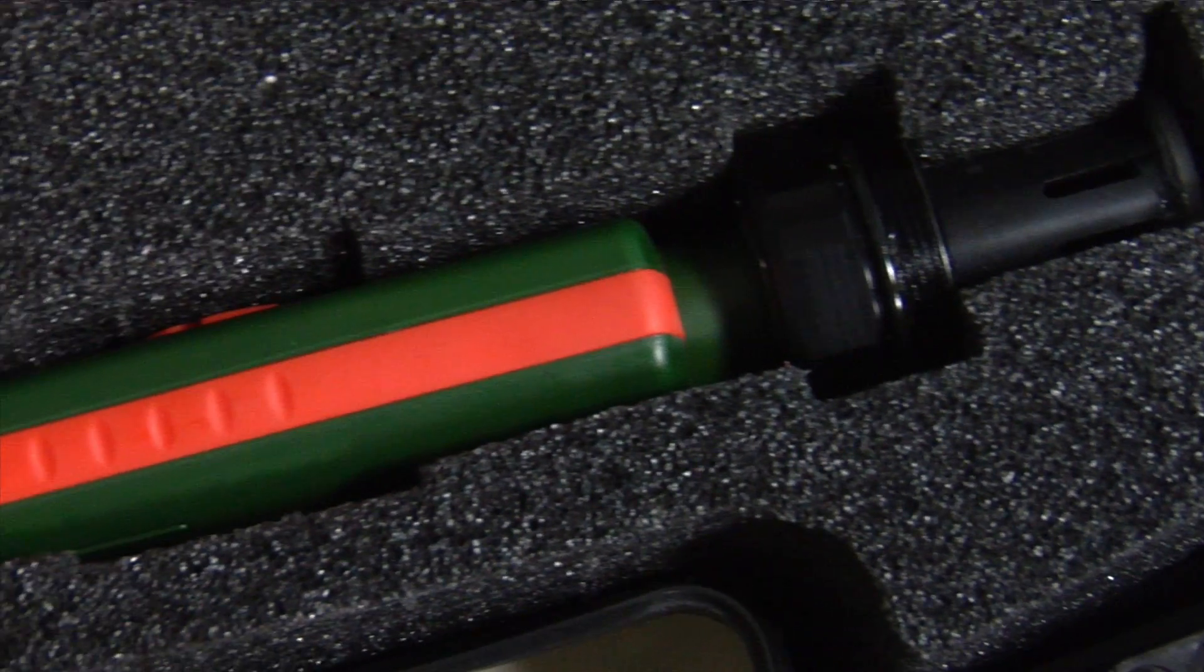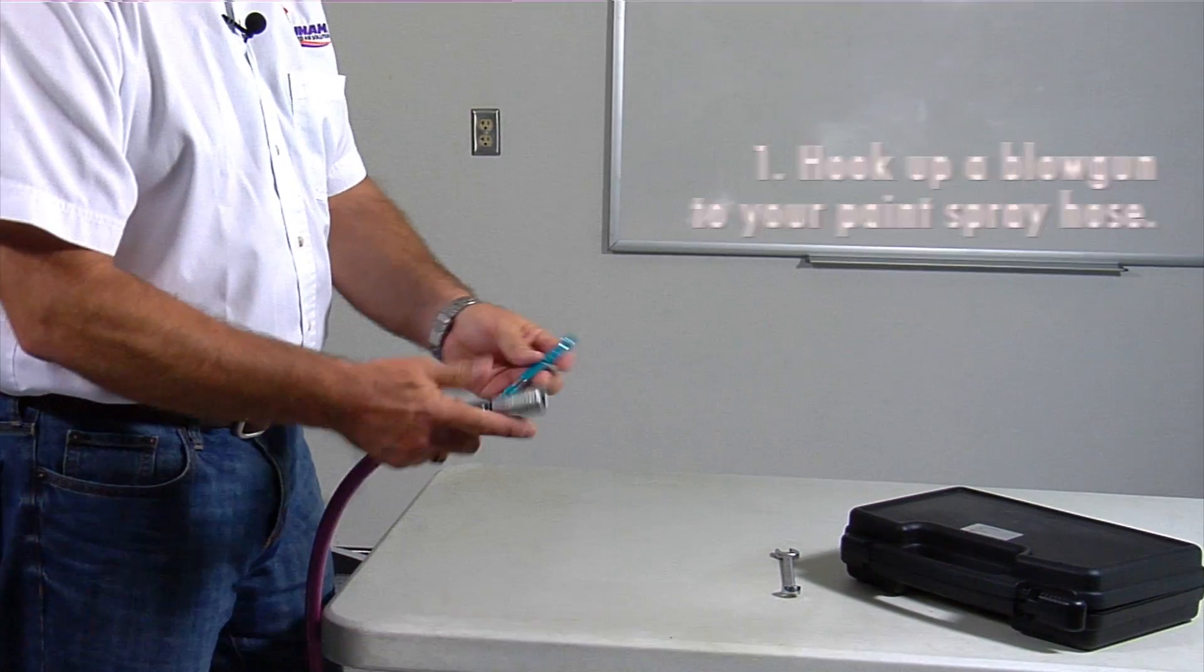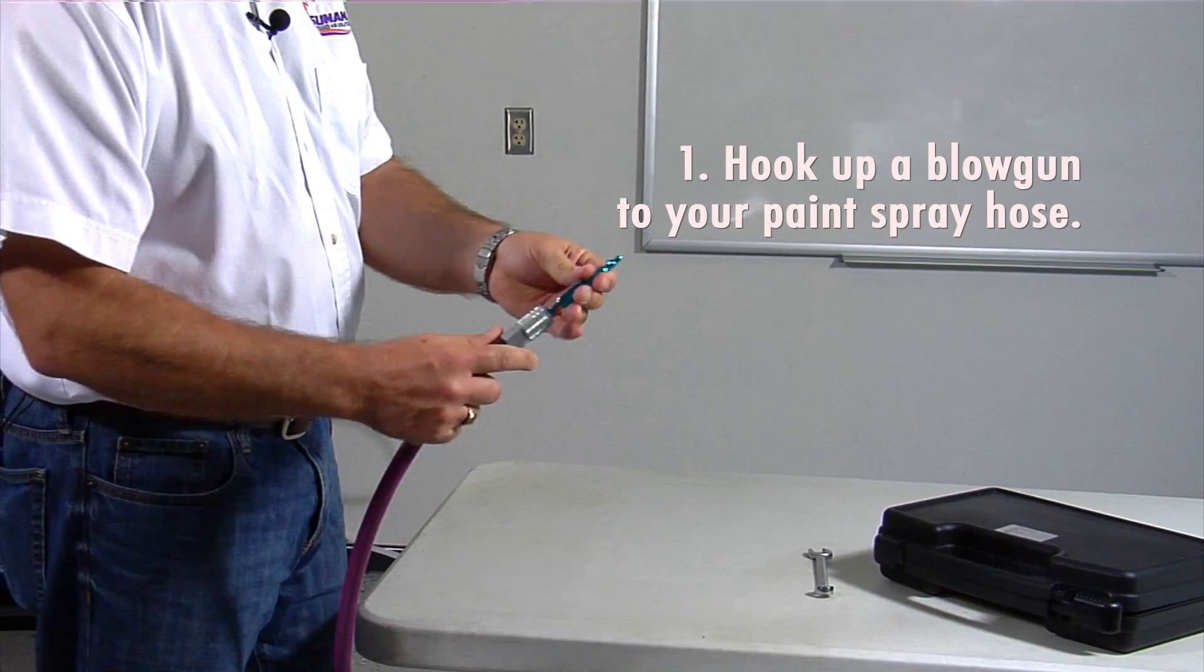We need to simulate compressed air system as it would be on a normal working day. To do this, it's easiest to hook up a blowgun on the hose used for painting and let it run for about 10 minutes.